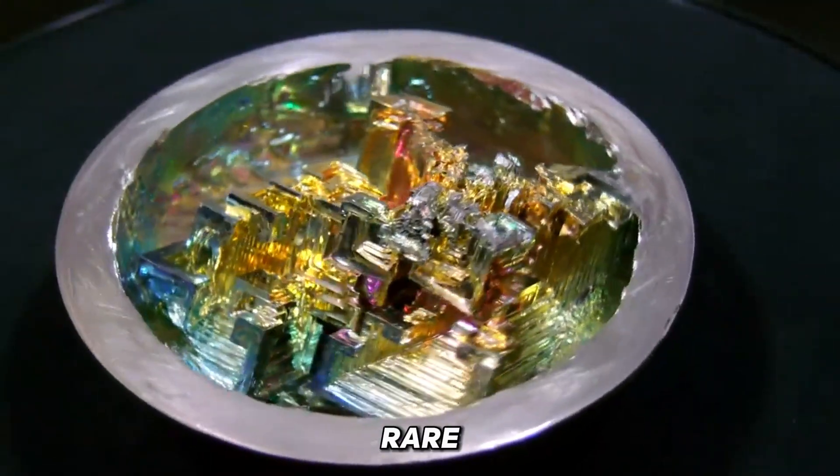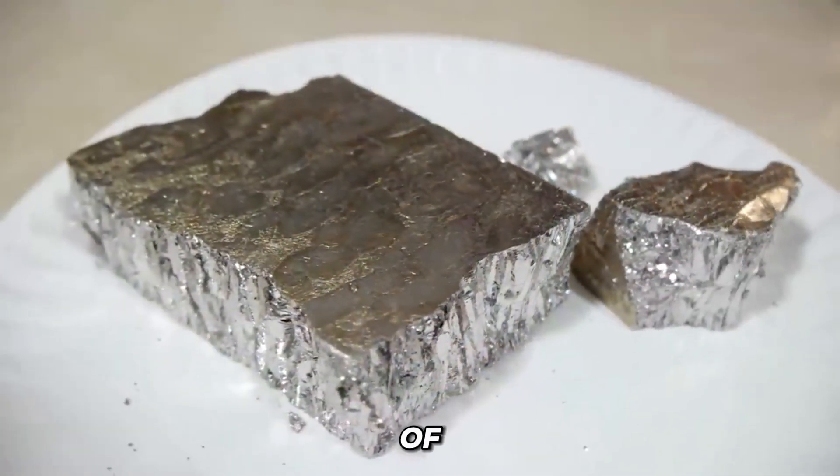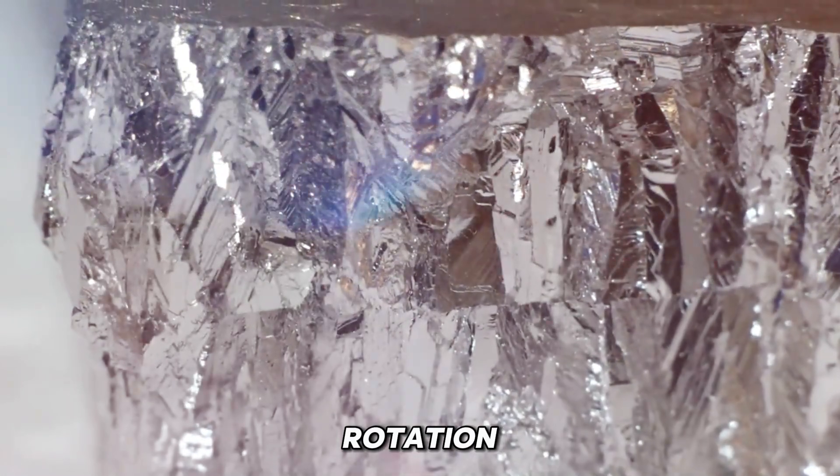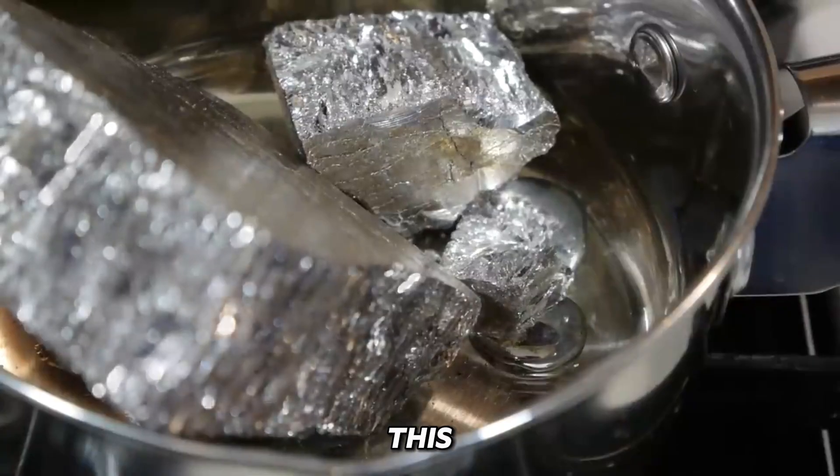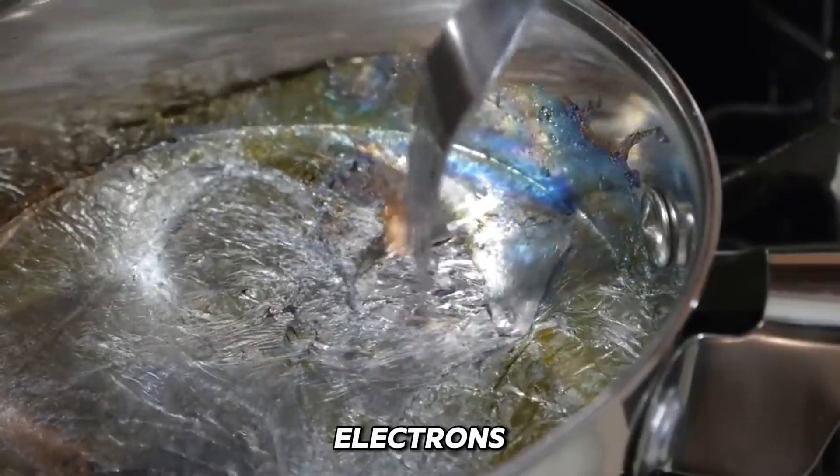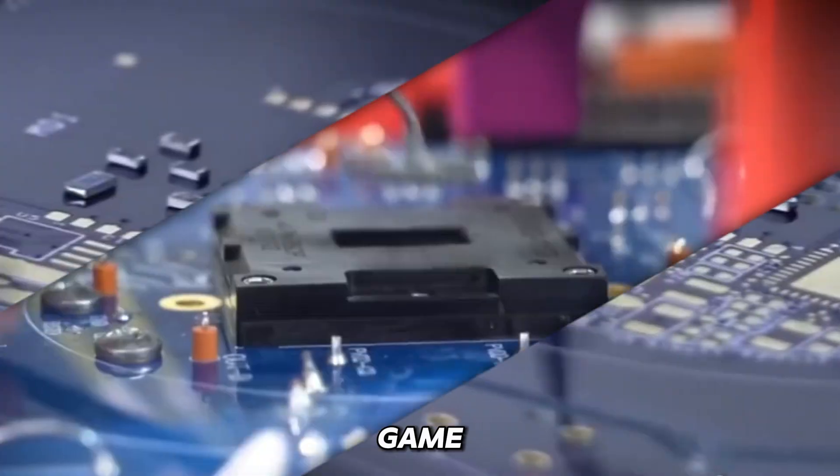Bismuth carries a rare feature: extremely strong spin-orbit coupling. In other words, the spin of electrons, a quantum trait acting like a direction of rotation, is closely tied to how they move around the nucleus. And this opens the door to something revolutionary. While silicon manages electrons only through charge, bismuth lets us control spin as well. This shifts the entire game.